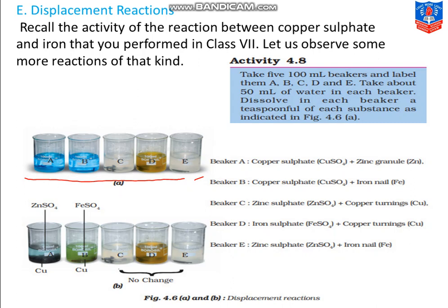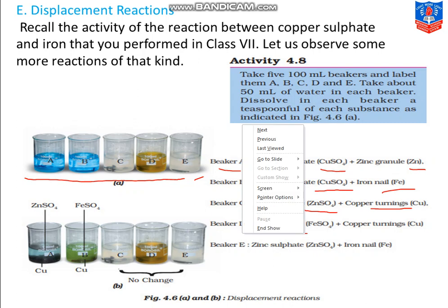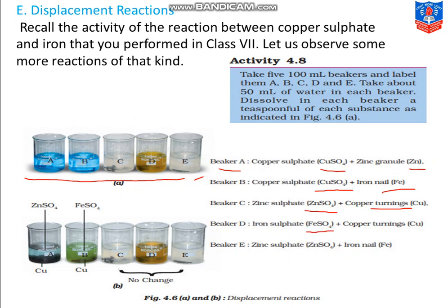Beaker A contains copper sulfate solution with zinc granules — zinc pieces in an aqueous copper sulfate solution. Beaker B has copper sulfate aqueous solution with an iron nail. Beaker C has zinc sulfate solution with copper turnings — copper pieces added. Beaker D has iron sulfate solution with copper turnings. And beaker E will have zinc sulfate solution with an iron nail.